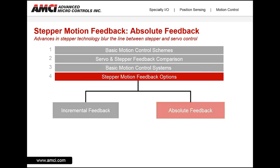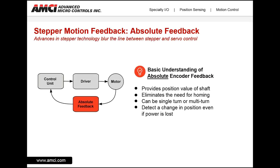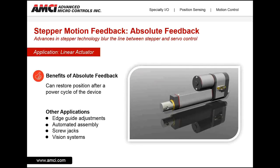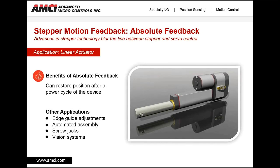Now for absolute position feedback. Absolute encoders provide the position value of a shaft — they know where the shaft is at any given point in time. Because of this, they can eliminate the need for homing on power-up and in-between move cycles. The absolute position feedback can be either single turn or multi-turn, and it can detect a change in position even if power is lost. Absolute encoders are ideal for linear applications. As the motor shaft rotates clockwise and counterclockwise, the control unit continuously monitors the motor shaft position. If power is lost, the absolute encoder can re-establish position of the linear actuator once power is restored, eliminating the need for a home cycle on every power-up.